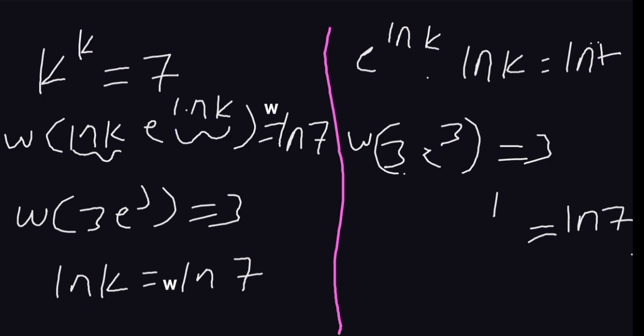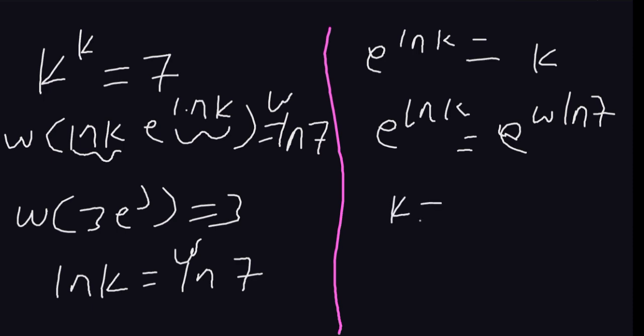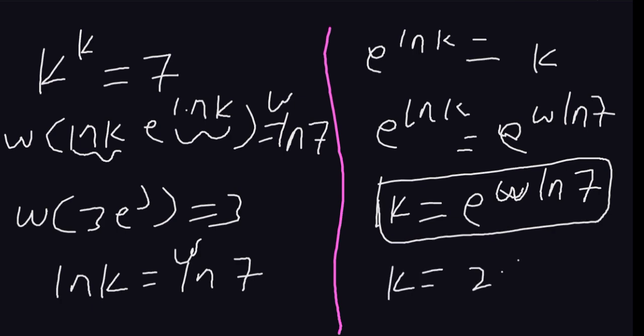Now I have the ln of k, but I need k. How will I get the value of k? You notice that if I have e to the ln of k, this is the same as k. So I'm going to introduce exponent on both sides. It shall be e to the ln of k equals e to the W of the ln of 7. K equals e to the W of ln 7. This is our value of k, which when worked out is approximately 2.316.